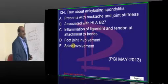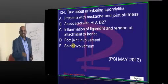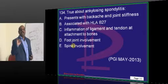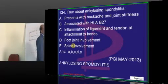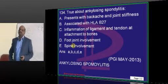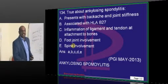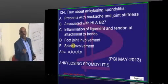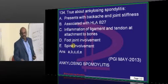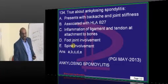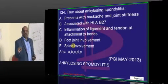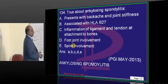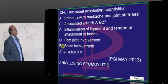Ankylosing spondylitis, Reiter's disease, and Behçet's syndrome are called seronegative spondyloarthropathies. Patients have backache and are called enthesopathies because there is inflammation at the points where ligaments and tendons attach to bones — hence called enthesitis. HLA-B27 is associated. There is spine (axial skeleton) involvement.